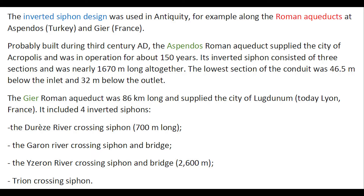The inverted siphon design was used in antiquity, in particular along a number of Roman aqueducts. In Aspendos, built during the first century AD, the river aqueduct supplied the city acropolis and was in operation for more than 100 years. Its inverted siphon consisted of three sections and was altogether nearly 1.6 km long. The lowest section was 4.6 m below the inlet and 32 m below the outlet.